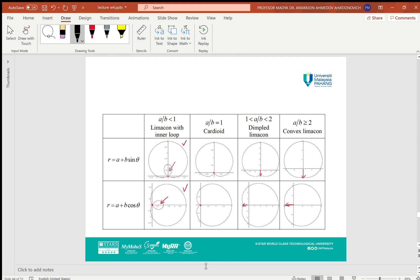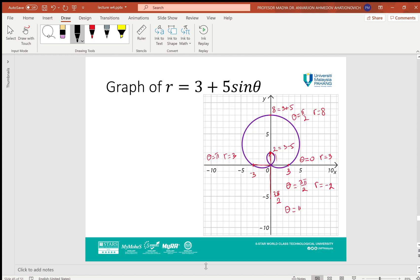You can see when in the case of cosine, all graphs of a + b sin θ are rotated by π/2 angle. I can show one example here how to sketch.